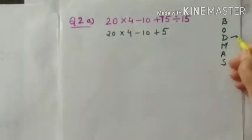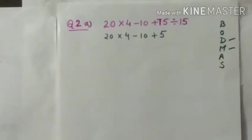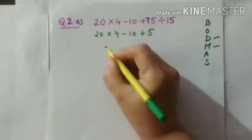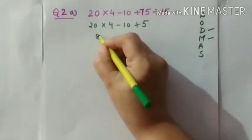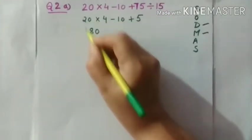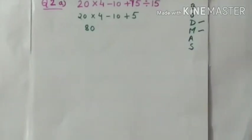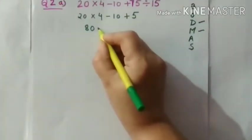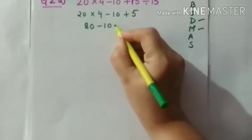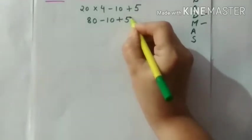Now next, according to BODMAS rule, we have to next follow what? Multiply. So 20 into 4 means 80. 4 into 8 and 0. So this will be multiplied. And then we have to write rest operation minus 10 plus 5.